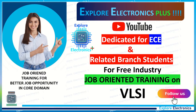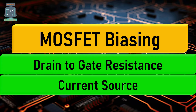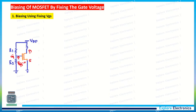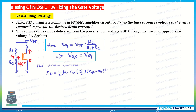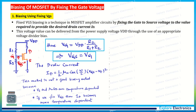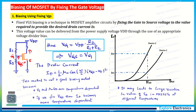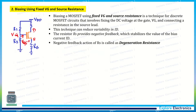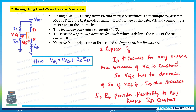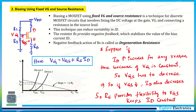Hey guys, welcome back to Explore Electronics. In this video let's understand the next two biasing methods in MOSFET: drain-to-gate resistance biasing and using a current source. In the previous video we saw two biasing methods — fixing VGS directly, which makes the device operate differently with respect to ID at different temperatures, and using source resistance to compensate that variation. These two methods are not suitable in all cases.